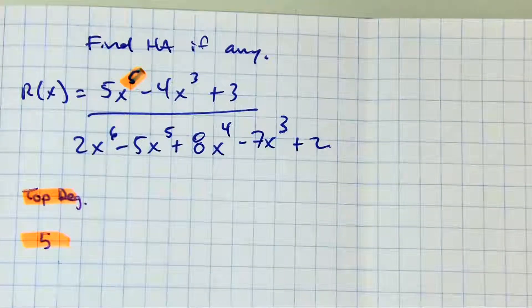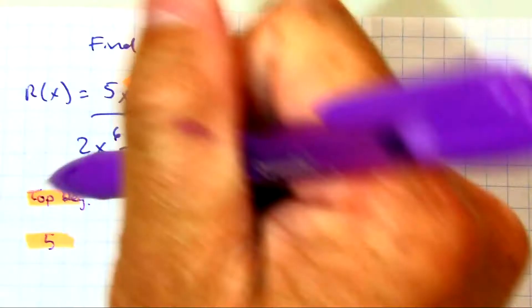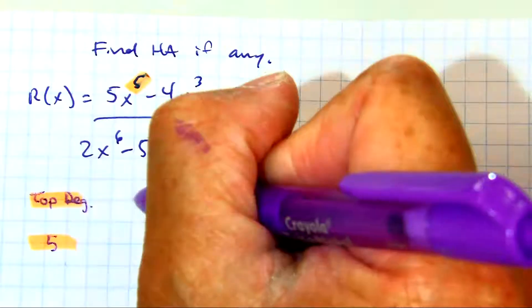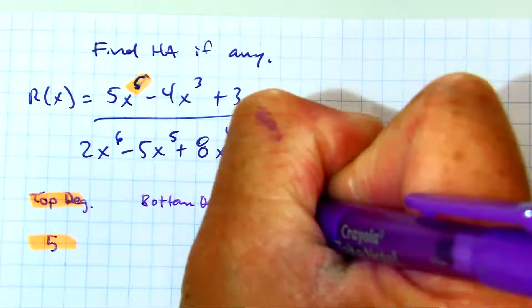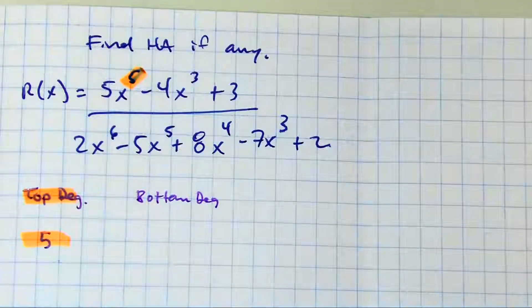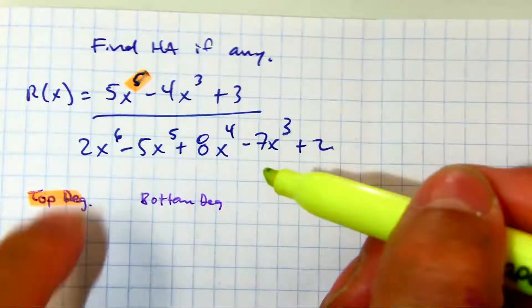And now let's look at the denominator, the bottom degree. Put your finger on the largest one. What do you have? 6.